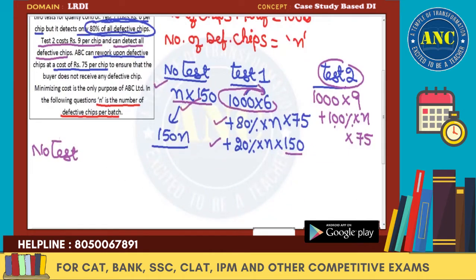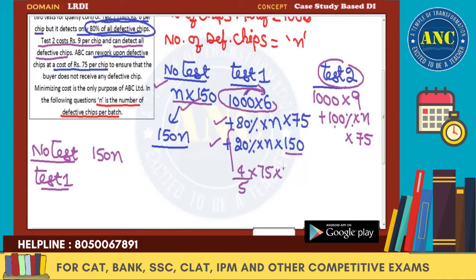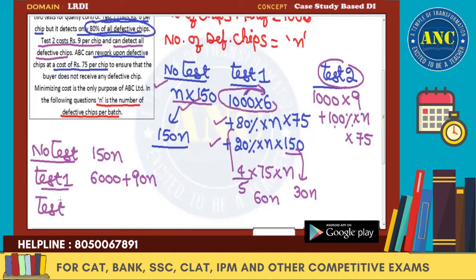Let us write down the three equations. No test cost is 150N. Test 1 cost: testing = 6000, rework = 0.8 × N × 75 = 60N, penalty = 0.2 × N × 150 = 30N. So Test 1 total = 6000 + 90N. Test 2 total: 9000 + 100% × N × 75 = 9000 + 75N.